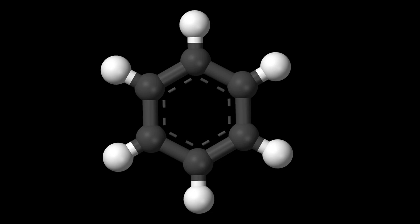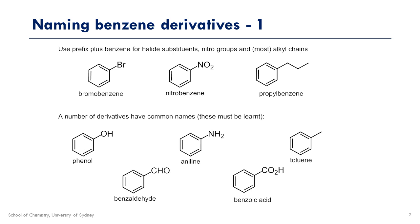Here's a brief introduction to the naming of aromatic compounds. We'll start with the easy ones. Substituents on benzene get prepended in front of the name benzene. So here we have bromobenzene, nitrobenzene and propylbenzene.